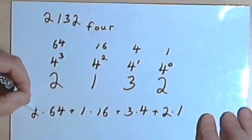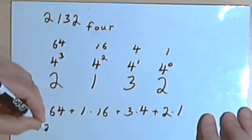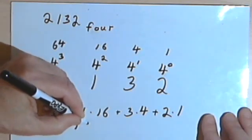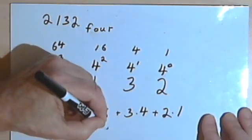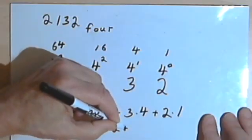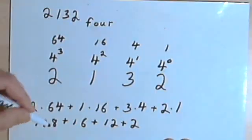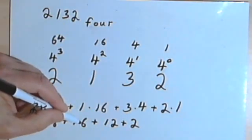So let's multiply these out. 2 times 64 is 128, plus 1 times 16 is 16, plus 3 times 4 is 12, plus 2 times 1 is 2.